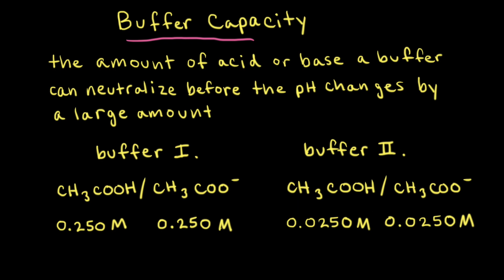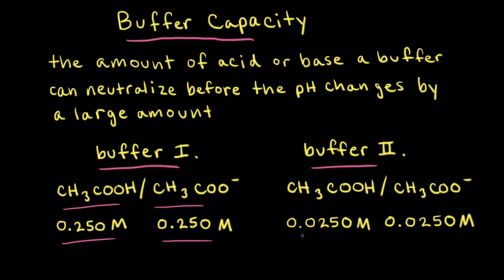Let's compare two buffers, buffer solution 1 and buffer solution 2, and see which one has the higher buffer capacity. Buffer solution 1 has a concentration of acetic acid of 0.250 molar and a concentration of acetate anion also 0.250 molar. Buffer solution 2 also consists of acetic acid and the acetate anion, however in this case both concentrations are 0.0250 molar. So buffer solution 1 has a higher concentration of both acetic acid and the acetate anion.